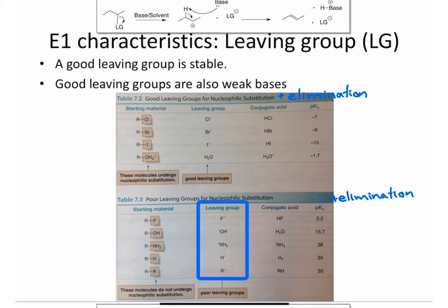Table 7.3 shows some examples of poor leaving groups, including fluoride, hydroxide, amide, hydride, and carbon-based nucleophiles. These are very bad leaving groups. Their conjugate acids are fairly weak, so they have higher pKa values.